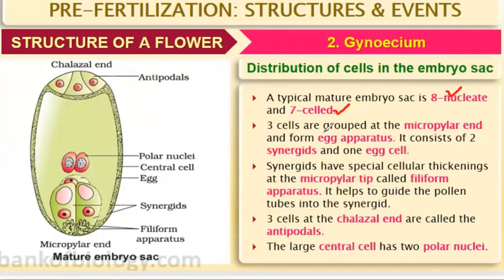Three cells are grouped at the micropylar end — where the integuments are absent — and form the egg apparatus. These three cells are at the micropylar end, and the polar nuclei in the central cell are positioned below.